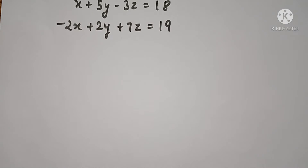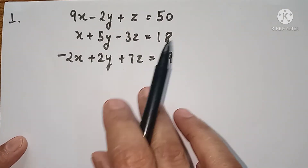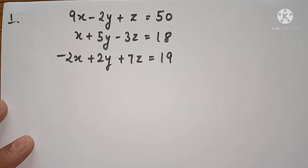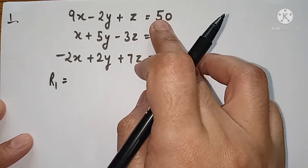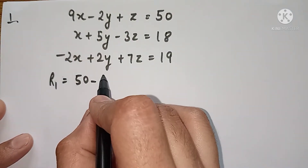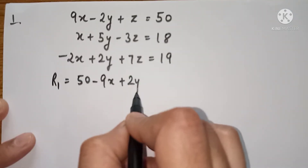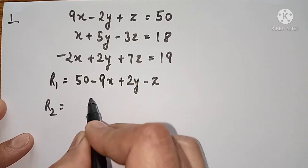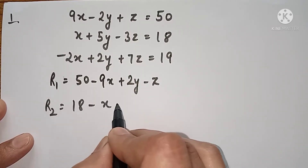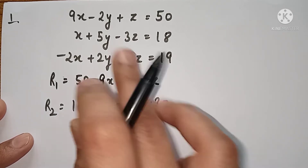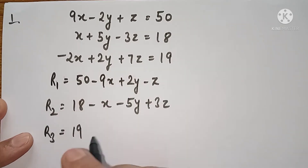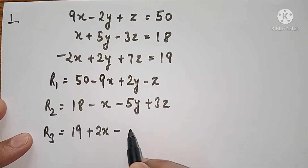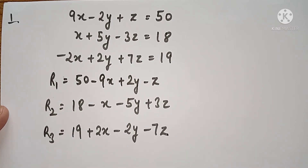तो question से शुरू करते हैं। First question की statement देखिए — हमारे पास तीन equations given हैं। सबसे पहले हमें residuals define करने हैं: R1, R2 और R3। R1 की value: 50 बाकी सब terms को right पर ले जाएंगे तो signs change हो जाएंगे। R2 बनेगा: 18 minus x minus 5y plus 3z। R3 बनेगा: 19 plus 2x minus 2y minus 7z। तो यह R1, R2, R3 आपके residuals आ गए।